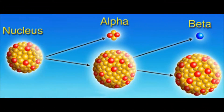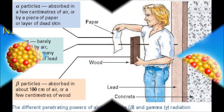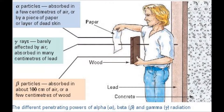A radioisotope is the breaking down of the atom's nucleus. Radioactive emissions consist of different types of radiation such as alpha, beta, or gamma radiation.